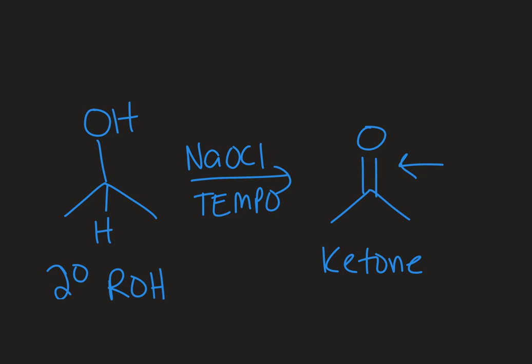So this has been a look at chromium-free oxidizing agents — specifically bleach in the presence of TEMPO — to accomplish oxidation of alcohols. With a primary series, I can get either an aldehyde or a carboxylic acid depending on how much bleach I use. With a secondary alcohol, I would just see a ketone.